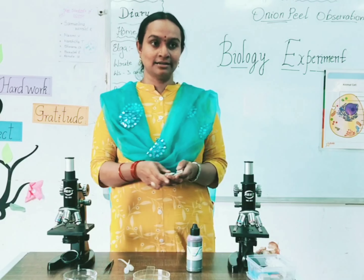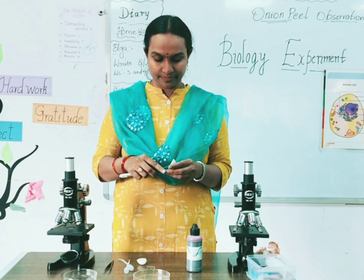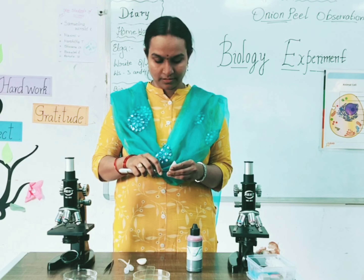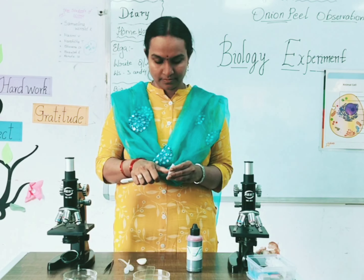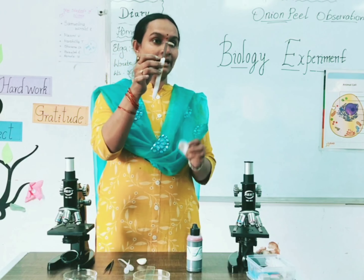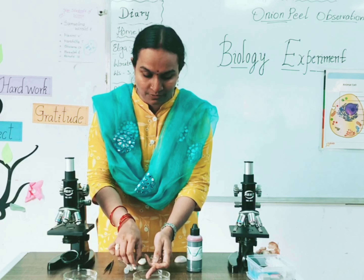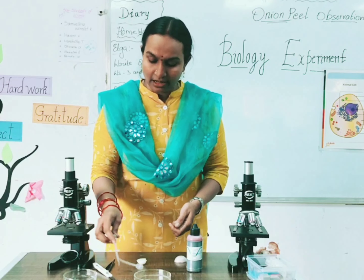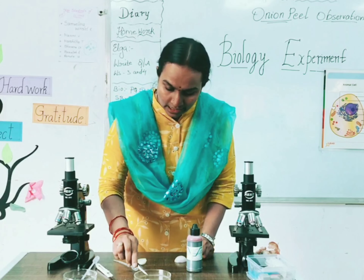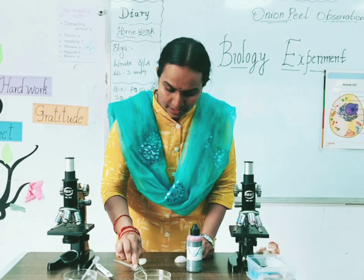Let us start. First I am taking the peel outside — a very small peel I am taking out. It's very easy to take out. With the help of a cutter we can easily peel a single layer of an onion. Now I am going to wash it with some water. Here I am taking a dropper, some amount of water, and just going to wash it first.